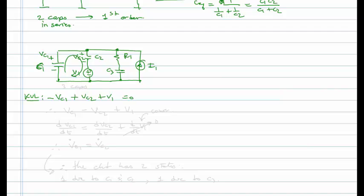VC1 is equal to VC2 plus V1. If we look at DVC1, DT, take the derivative, we'd have DVC2, DT, plus the derivative of V1. Which is going to be zero if this is a constant. So therefore, we can say that VC1 dot is equal to VC2 dot.